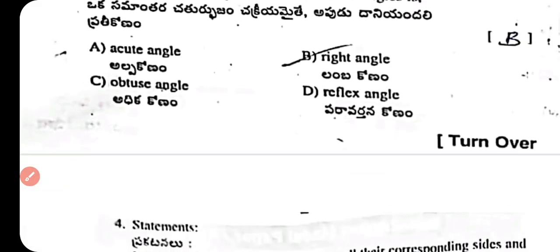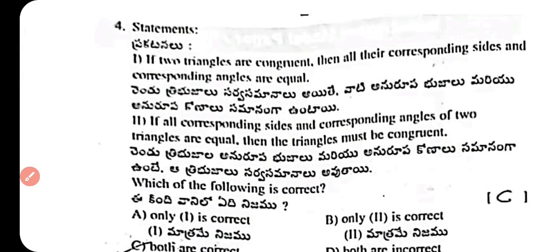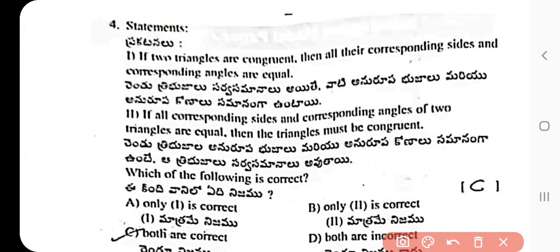Question 4: Statement 1 — if two triangles are congruent, then all their corresponding sides and angles are equal. Statement 2 — if all corresponding sides and angles of two triangles are equal, then the triangles must be congruent. The answer is option C: both statements are valid. Statement 1 refers to CPCT and statement 2 refers to the definition of congruency by superposition.